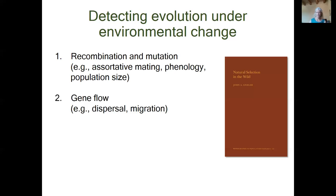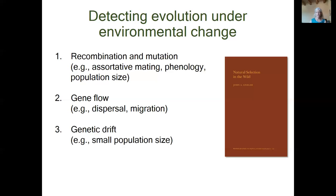Second, environmental changes that influence species distributions by affecting dispersal or migration could alter allele frequencies by influencing patterns of gene flow. This could be important, for example, in cases where species are shifting their elevational or latitudinal ranges under climate warming. Third, changes that reduce population size will increase the likelihood of non-adaptive evolutionary change through increased genetic drift and reduced genetic diversity.